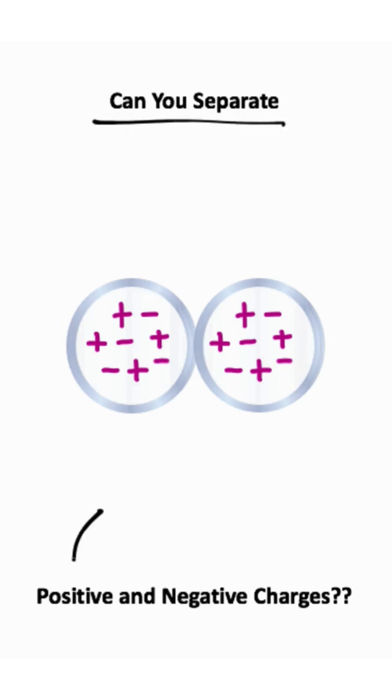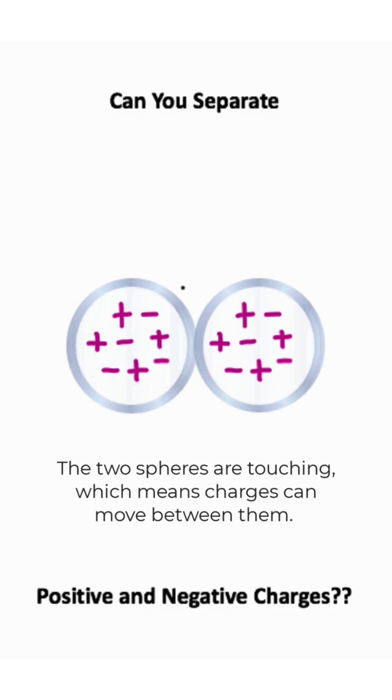What we're trying to figure out is how we can separate the charges. This is going to be kind of hard to do because like charges repel each other and opposite charges attract each other. So trying to separate these as they are would be difficult, but we can do this using electrostatic induction.